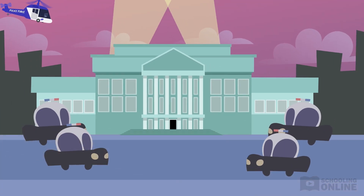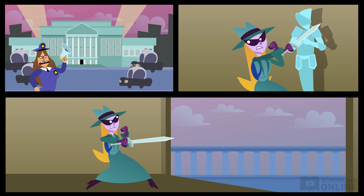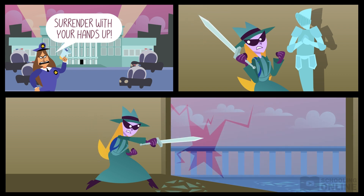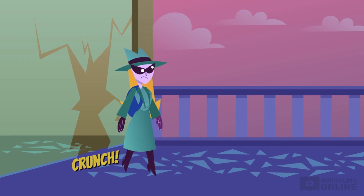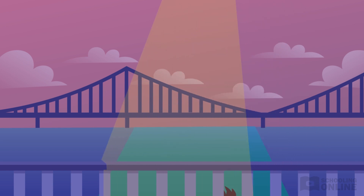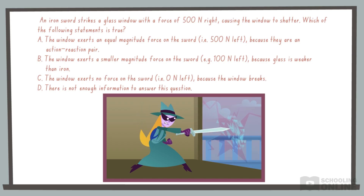Blinding lights illuminate the solitary sleuth and all possible exits. The field sergeant proclaims that Carmen is surrounded. But she doesn't plan to surrender — she wrenches a sword from the iron grip of a statue, thrusts it at a window, and watches the shards scatter across the tiles. Lotus arrives just in time to glimpse Carmen slipping away. Let's rewind to the scene where Carmen shattered the window. Pause the video to read the question and think about your answer.